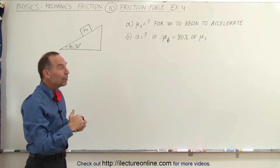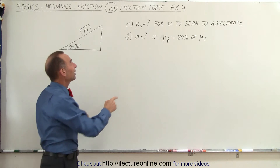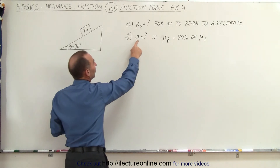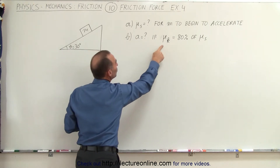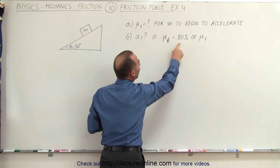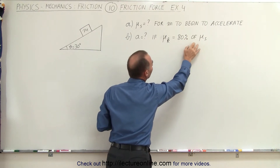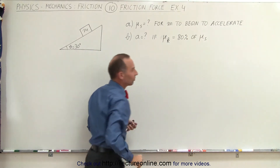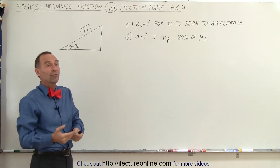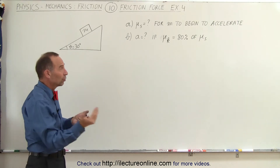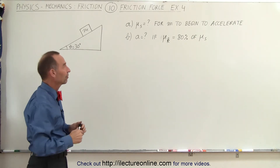And secondly, once it begins to accelerate, we want to find out what the acceleration is if we assume that mu sub k is 0.8, or 80 percent of the value of mu sub s, because mu sub k, the kinetic coefficient of friction, is always lower than the static coefficient of friction.